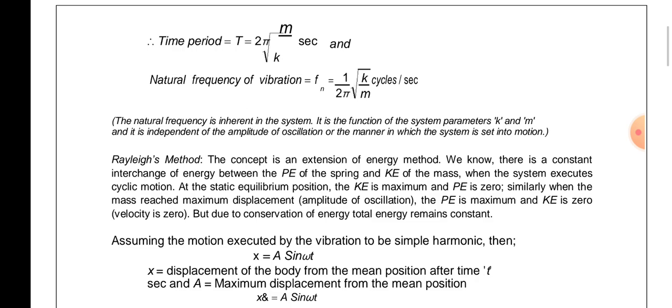Now, one more method: the Rayleigh method. The Rayleigh method states that at the extreme point, potential energy is maximum and kinetic energy is negligible, while when kinetic energy is maximum, potential energy is zero. When the mass reaches maximum deflection, PE is maximum and KE is zero. Due to conservation of energy, total energy remains constant.